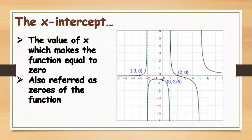What is the x-intercept? It is the value of x which makes the function equal to 0. It is also referred to as the zeros of the function.